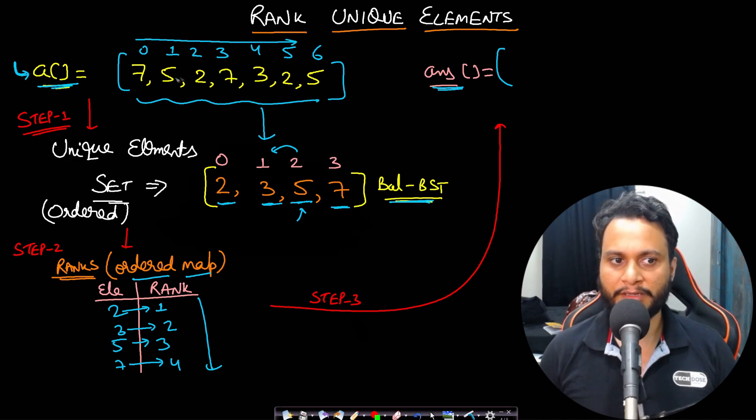I mean the input array and then find out what is the rank of seven using the map. So you will see that the seven has four ranks. So input four, what is the rank of five, five has three rank. So write three. What is the rank of two? It has one rank. So write one.